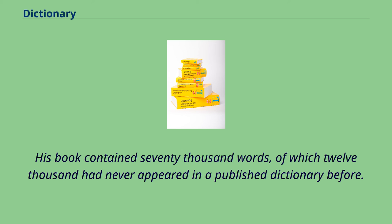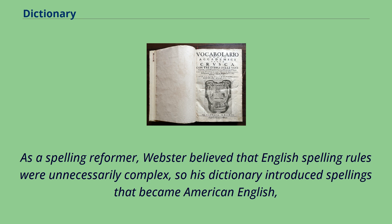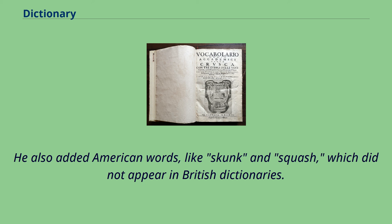His book contained 70,000 words, of which 12,000 had never appeared in a published dictionary before. As a spelling reformer, Webster believed that English spelling rules were unnecessarily complex, so his dictionary introduced spellings that became American English — replacing colour with color, substituting waggon for wagon, and printing center instead of centre. He also added American words like skunk and squash, which did not appear in British dictionaries.